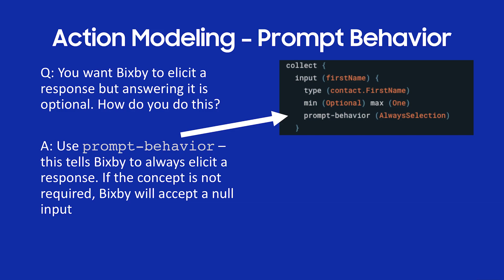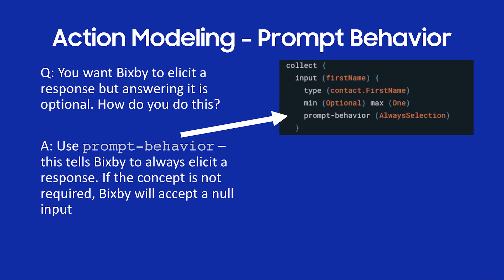What happens if I've set cardinality to optional but I'd really like Bixby to elicit that input from the user? In this example I'm inputting first name with min optional and max one. If I ran it that way, Bixby would never elicit that input. But I want Bixby to elicit it while still accepting no value as valid. So look at this: prompt behavior always selection. That tells Bixby to always ask the user for the first name, even though cardinality is min optional. The user can enter a first name or nothing — both are totally valid.